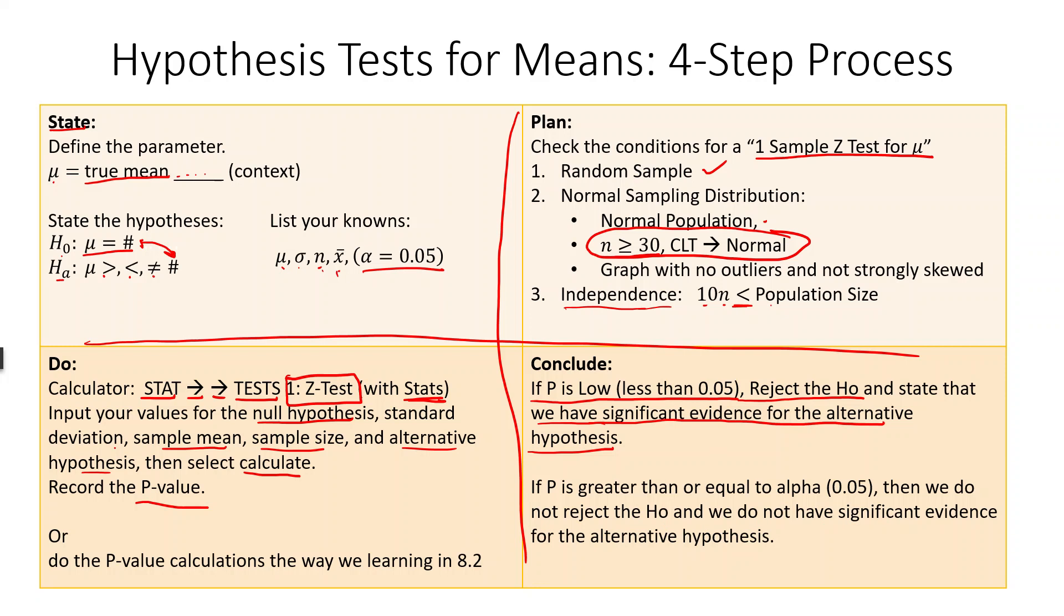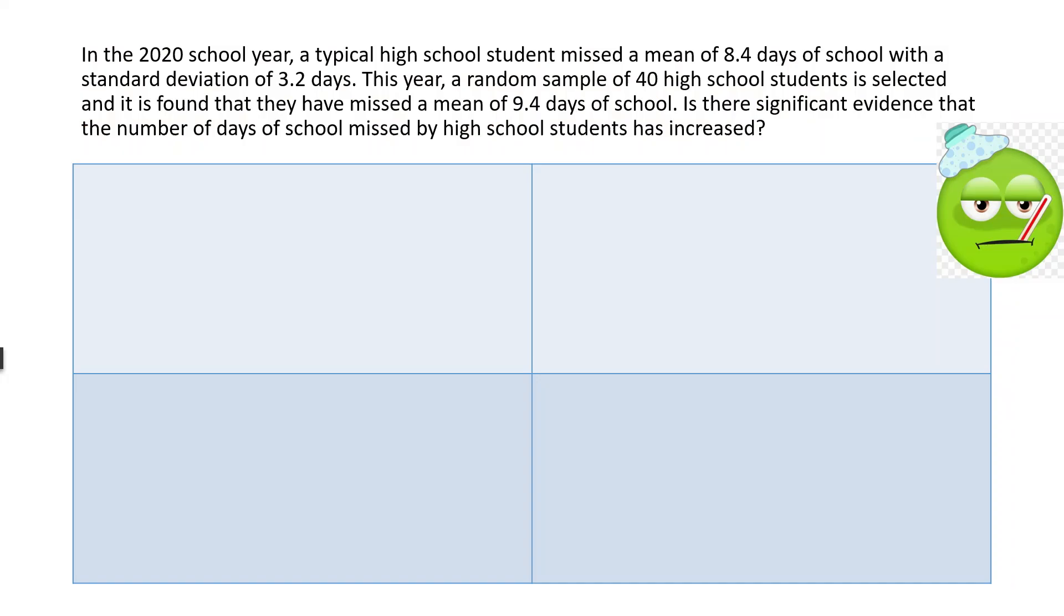So we just have two examples of this going forward. So here is our first example. In 2020, in the 2020 school year, a typical high school student missed a mean of 8.4 days of school, with a standard deviation of 3.2 days. This year, a random sample of 40 high school students is selected, and it is found that they have missed a mean of 9.4 days of school. Is there significant evidence that the number of school days missed by high school students has increased?